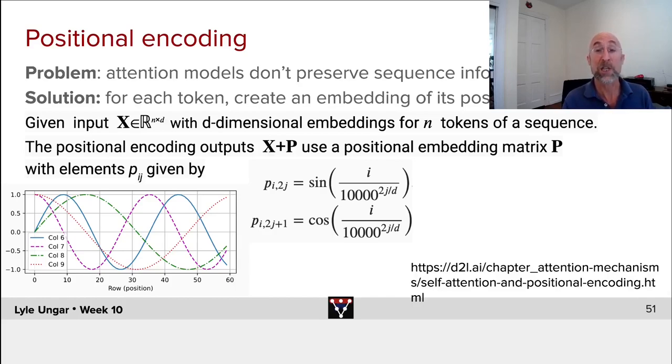Now, you could try and take each word and give it a label, input one or two or three or four, but it turns out to work better through the following slightly arcane encoding that builds up a representation of where each word is in the sequence using a bunch of sines and cosines.